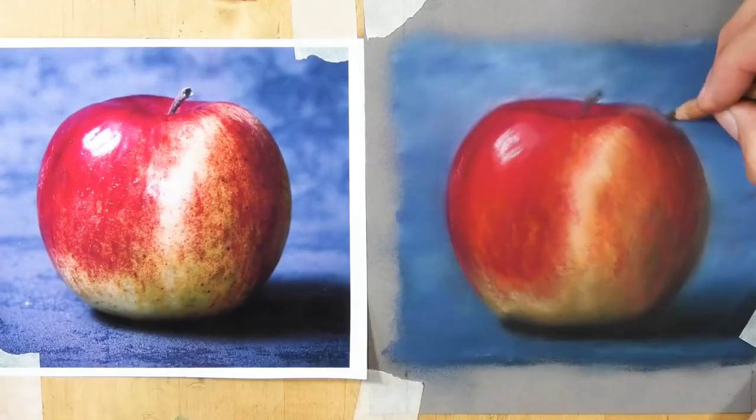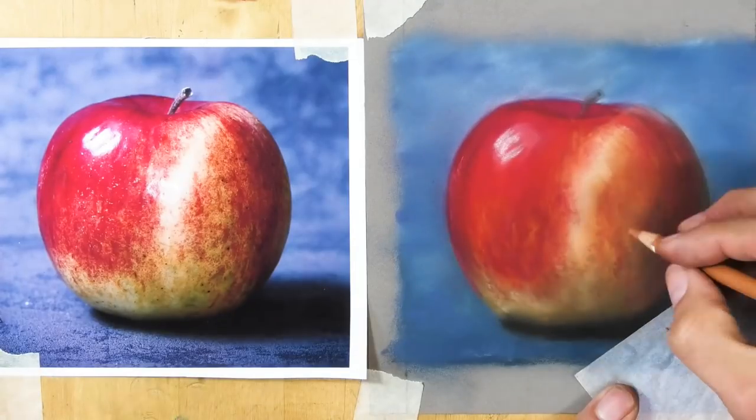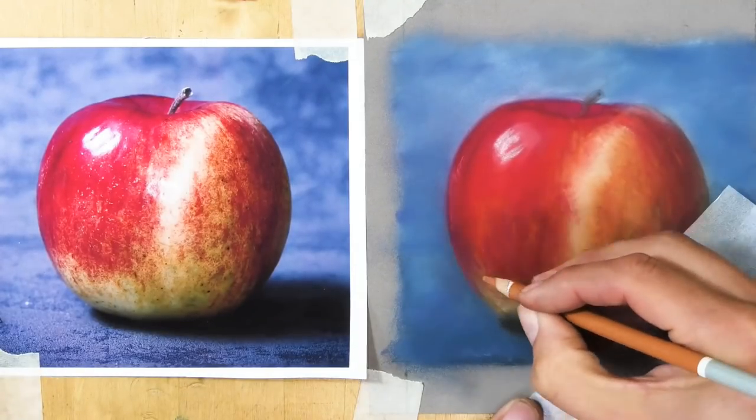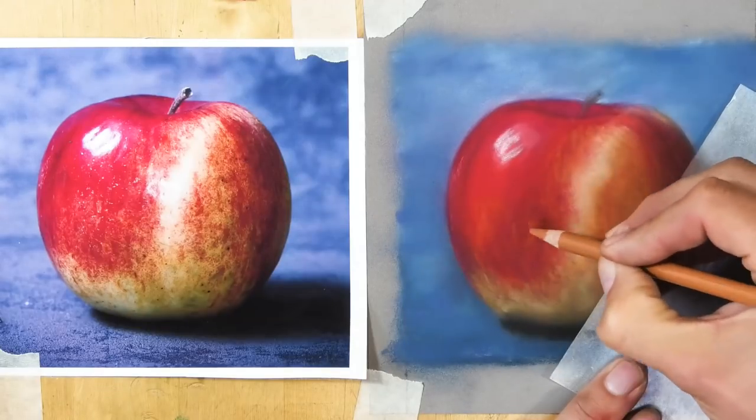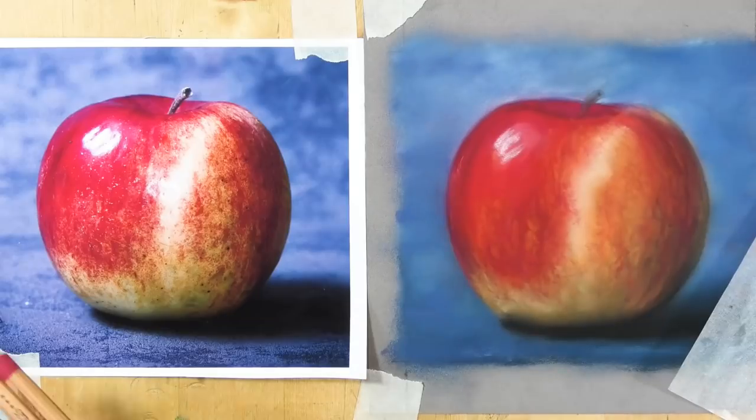But as you can see here, the details are going on pretty well. I want to make sure that I don't have a crisp outline on the edge—I want to keep it fairly soft, and that's going to add to the feeling of roundness of the apple rather than a cutout look to it.